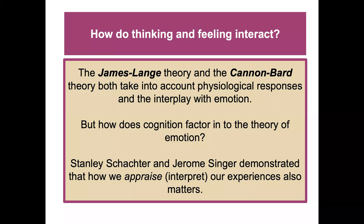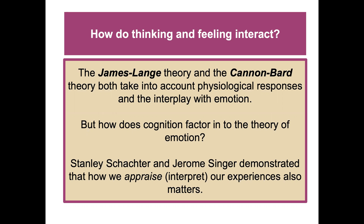How does cognition — our thinking — factor into the theory of emotion? Stanley Schachter and Jerome Singer demonstrated that how we appraise or interpret our experiences also matters. They developed the Schachter-Singer two-factor theory: our physical reactions and our thoughts — perceptions, memories, interpretations — together create emotion. In their theory, emotions have two ingredients: physical arousal and cognitive appraisal. An emotional experience requires a conscious interpretation of that physiological arousal.